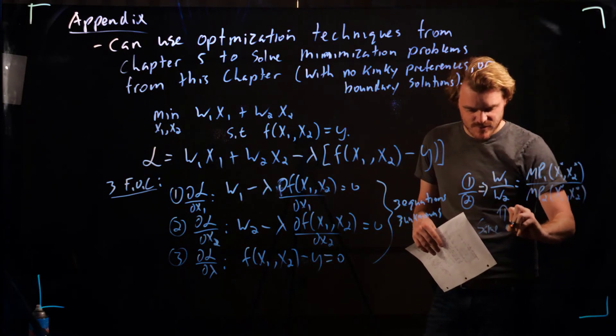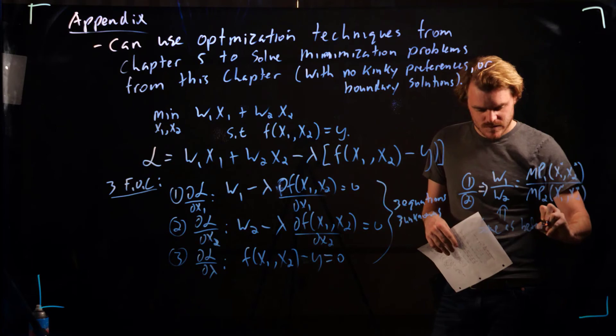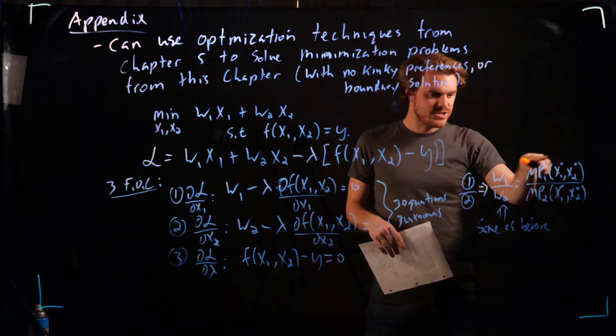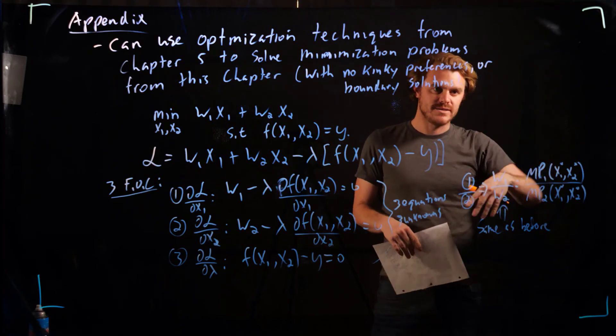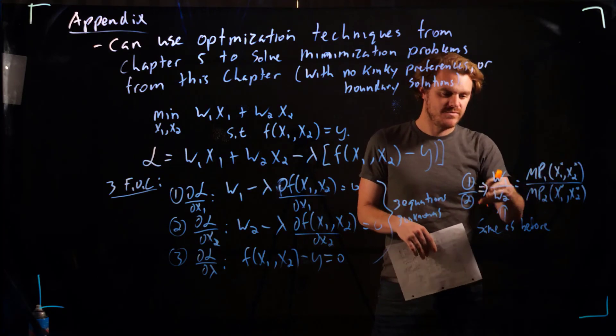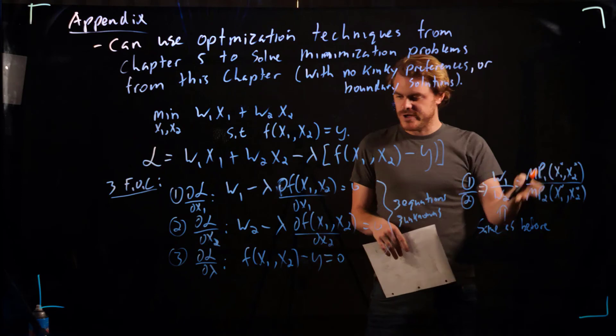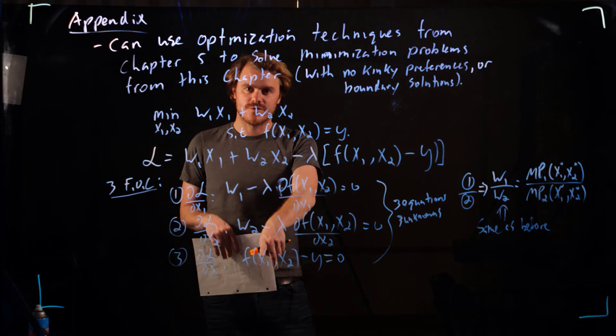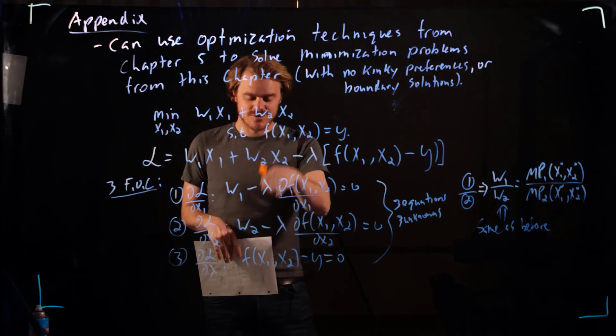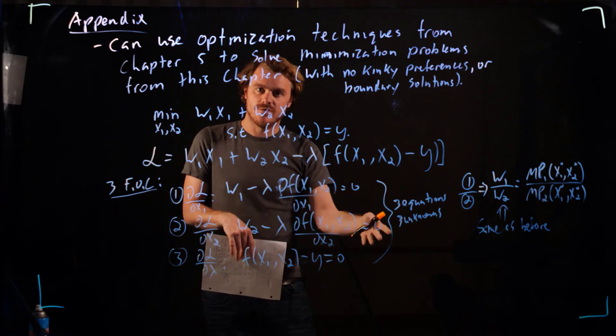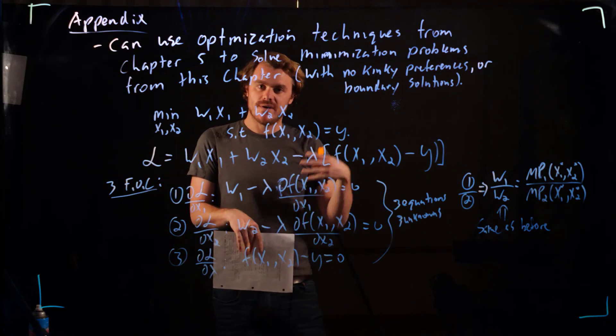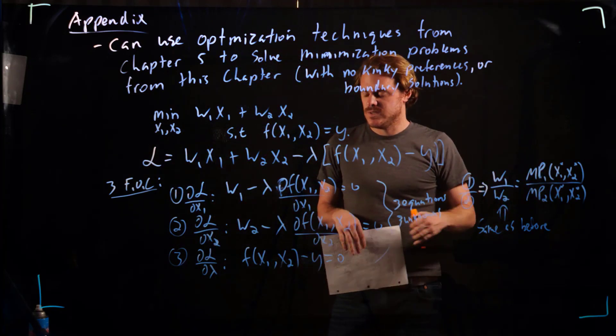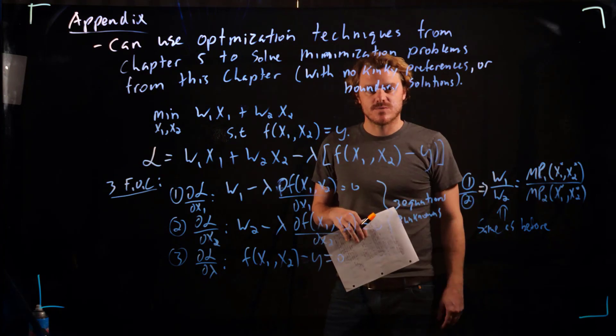Same as before. And then so we can solve this with respect to, we have an actual production function. We can solve x1 or x2 as a function of the input prices and the other good. Then we can plug that back into our third constraint here, our third first order condition, our constraint here. And we can solve for the actual level of x1 star and plug it back in and get x2 star. So that's sort of a method for solving these problems.